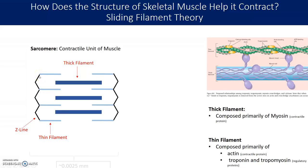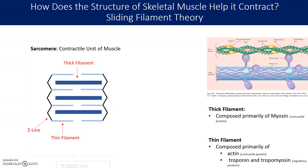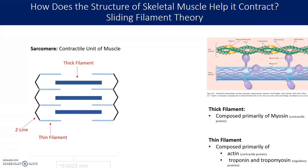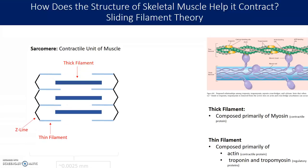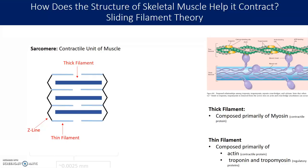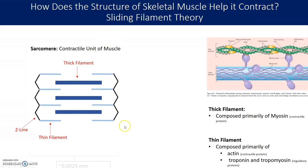The thin filament is primarily made of actin, troponin, and tropomyosin. Each muscle has many many sarcomeres in series. A sarcomere is defined as the distance between two Z-lines, and that distance is around 0.0025 millimeters — very very small. When a myosin head is activated it reaches out to the actin and pulls it in toward the center, making the distance between the two thin filaments smaller.